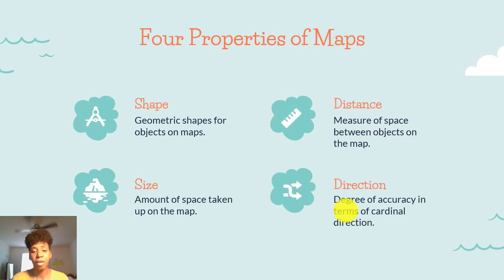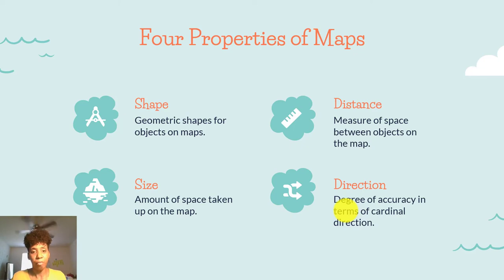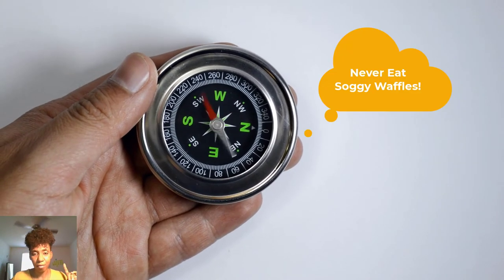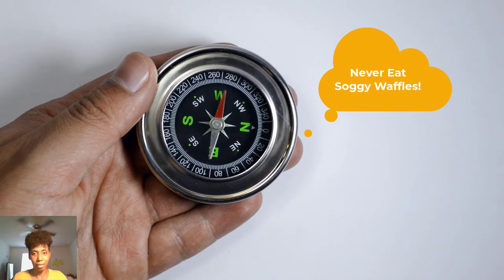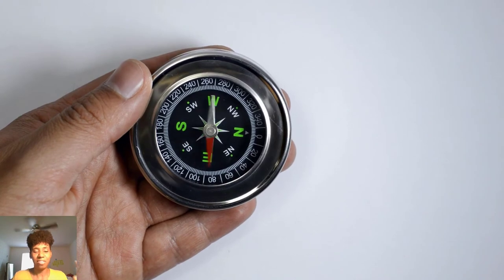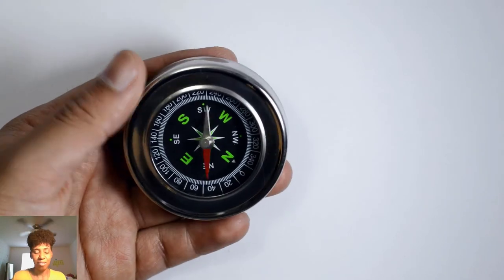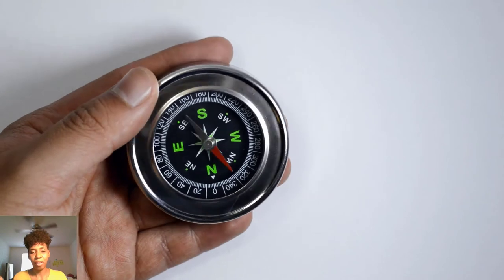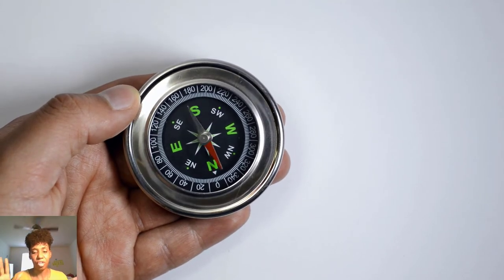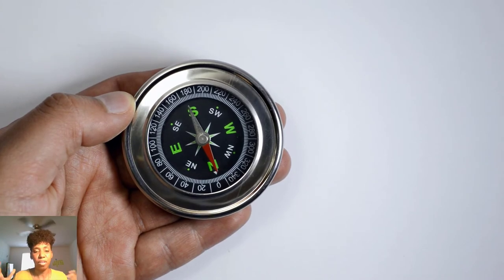There are four properties of maps: shape, size, distance, and direction. Shape refers to your land masses and how they're shaped. Size refers to how large they are. Distance is the measurement between different land masses. And direction — remember from elementary school, 'never eat soggy waffles' — north, south, east, west — along with northeast, southeast, southwest, and northwest. All of those directional degrees account for some accuracy of direction.